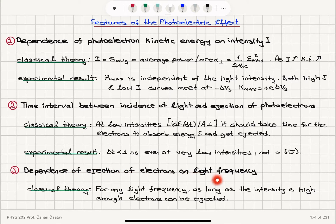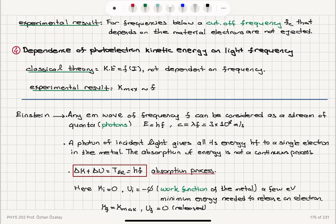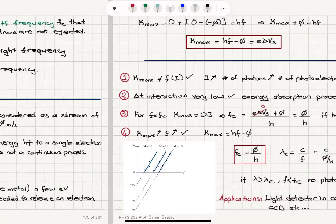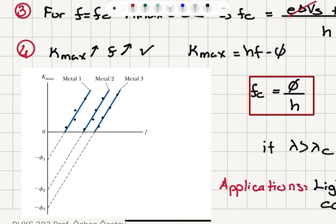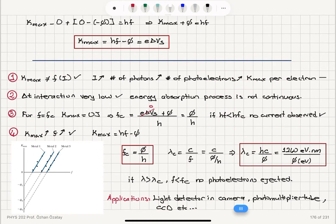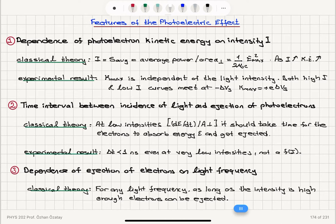Feature three is the dependence of electron ejection on light frequency. Classical theory says nothing about light frequency — as long as intensity is high enough, electrons should be ejected. However, the experimental result is that for frequencies below a cutoff frequency fc, which depends on the material, electrons are not ejected. If you plot Kmax versus frequency, there is a cutoff frequency below which electrons are not ejected. Classical theory says as long as intensity is high enough, photoelectrons should be emitted.